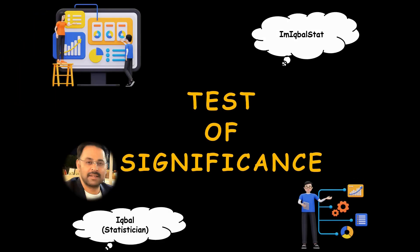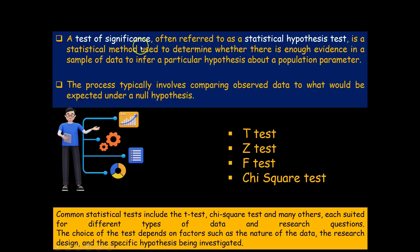Welcome back. In this video we will learn some of the important tests of significance, like t, z, f test, and chi-square test, which are very much used while testing a particular hypothesis. A test of significance, often referred to as a statistical hypothesis test, is a statistical method used to determine whether there is enough evidence in a sample of data to infer or conclude a particular hypothesis about a population parameter.